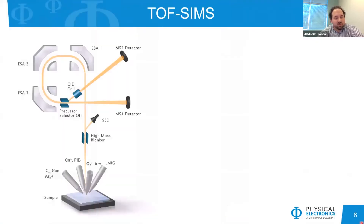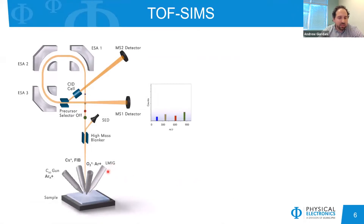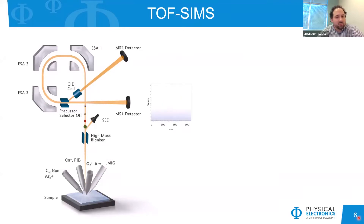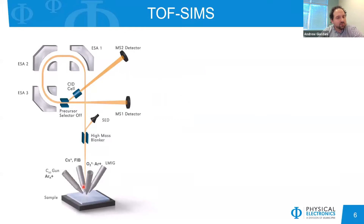TOF-SIMS takes a pulsed ion beam, bunches it to about a nanosecond pulse width, and then bombards the sample surface. Secondary ions are generated and extracted at roughly 3 kV. As they're extracted at the same nominal energy, they go through the drift spectrometer through three ESAs, and they are energy compensated, beginning to time-separate the ions based on their mass-to-charge. Lighter ions hit the detector first, followed by heavier ones. The mass spectrum shows the green peak corresponding to a higher mass-to-charge compared to the blue one, and it repeats as it rasters across the sample. There are also multiple other ion beams that can be used.